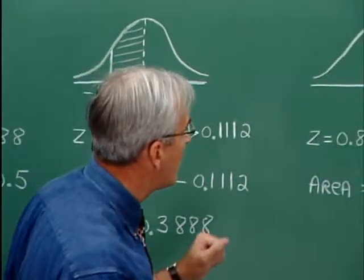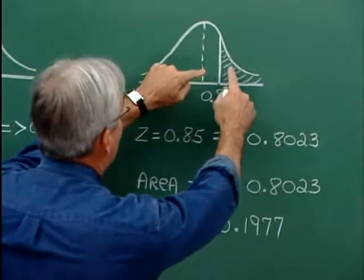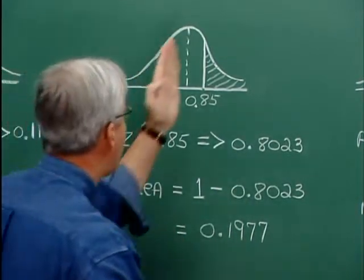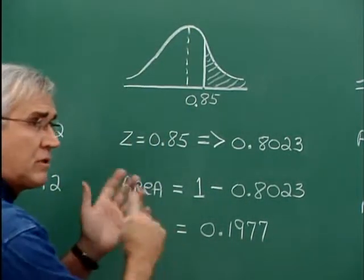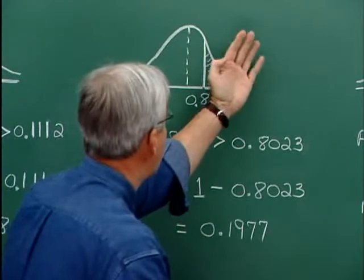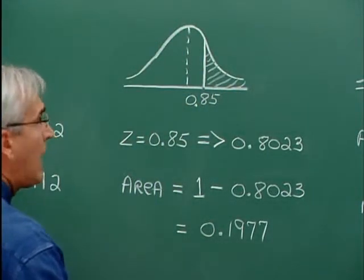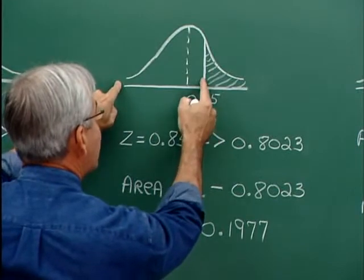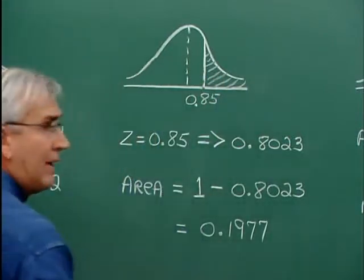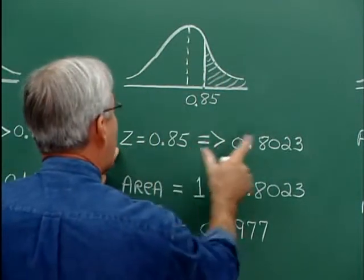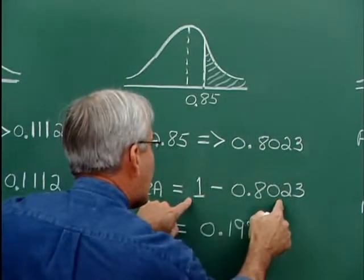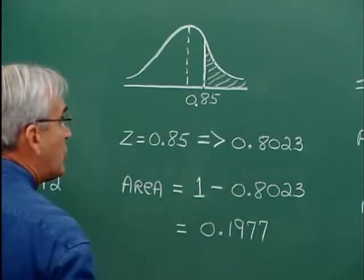To find the area to the right of z = 0.85: the left-tail table gives the area to the left of 0.85. Since the total area under the curve is 1, we take 1 minus the area from the table. That gives us the right-tail area corresponding to z = 0.85.